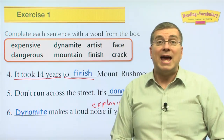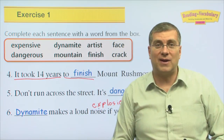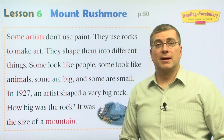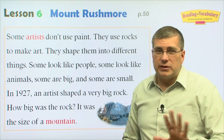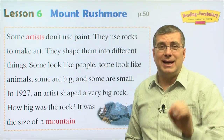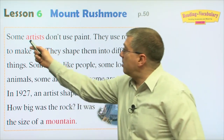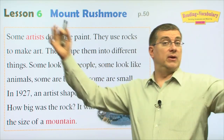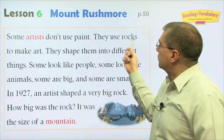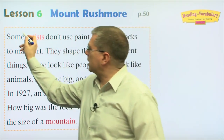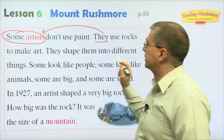Let's take a short break. We'll come back and read about Mount Rushmore — who built it, how long did it take, how did they build it? Welcome back. The reading is about Mount Rushmore, but the passage doesn't talk about it right away. It talks about artists first. Some artists don't use paint — they use rocks to make art. They is some artists — they don't use paint, they use rocks.